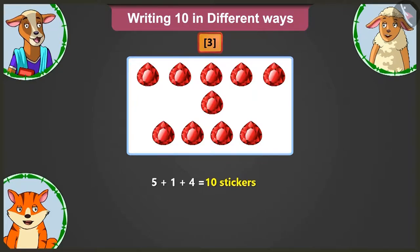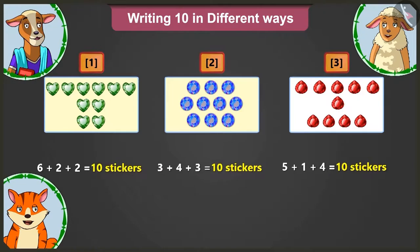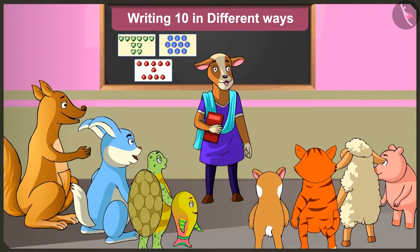Well done, Lily. So children, today we learnt that adding 2 and 2 to 6 is 10. Adding 4 and 3 to 3 is 10. And adding 1 and 4 to 5 is also 10. So in this way, you can write 10 in different ways. Yes, ma'am. We have learnt how to write 10 in different ways. Okay, remember that.